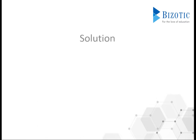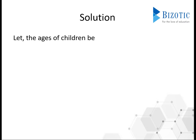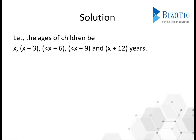Now let's look into the solution. Let the age of the first child be x. Then the next ages of the children will be x, x plus 3, x plus 6, x plus 9, and x plus 12. Because in the question they have mentioned that they are born with an interval of 3 years each.